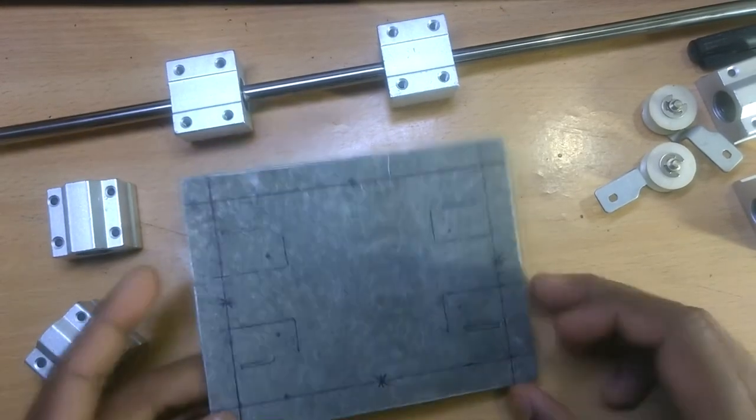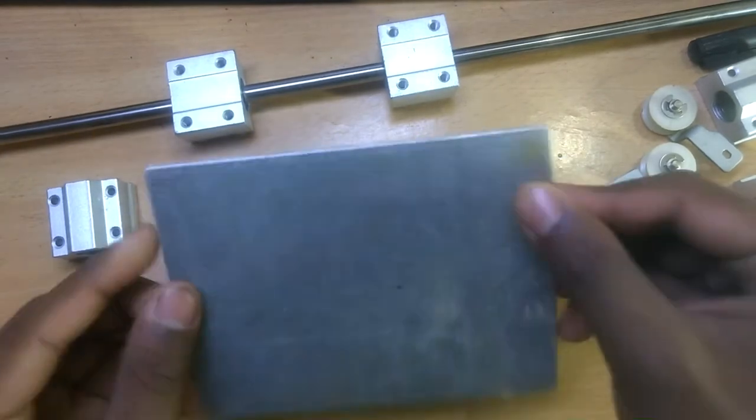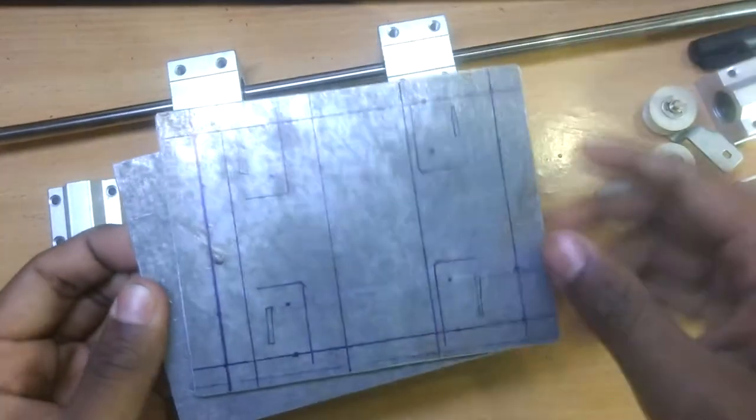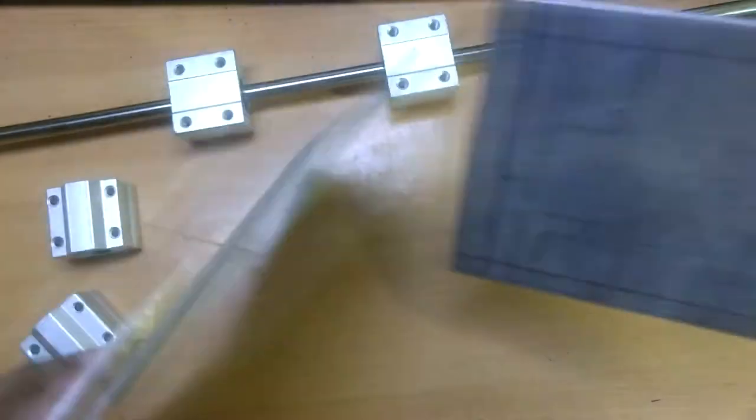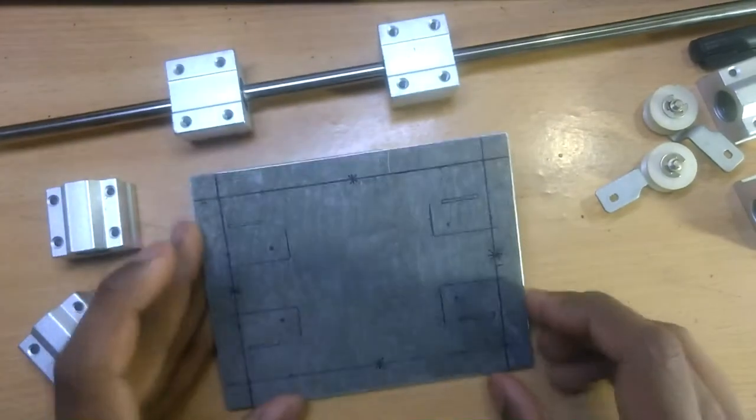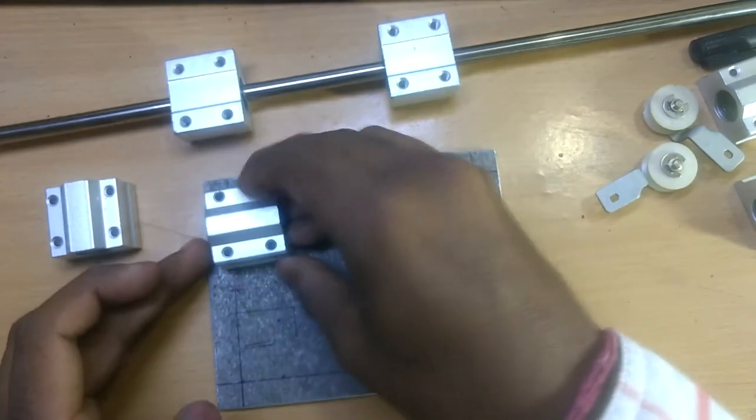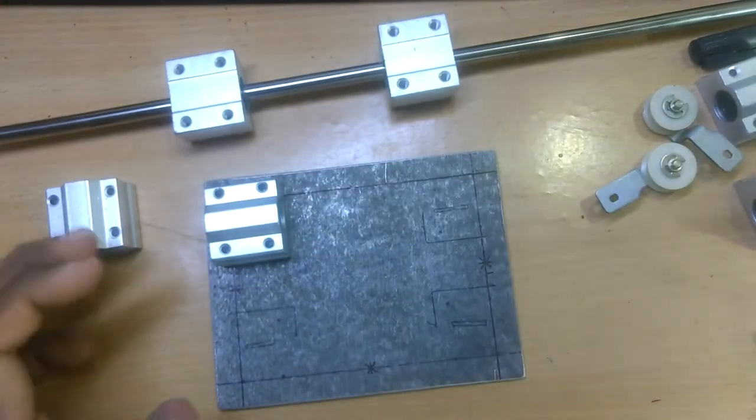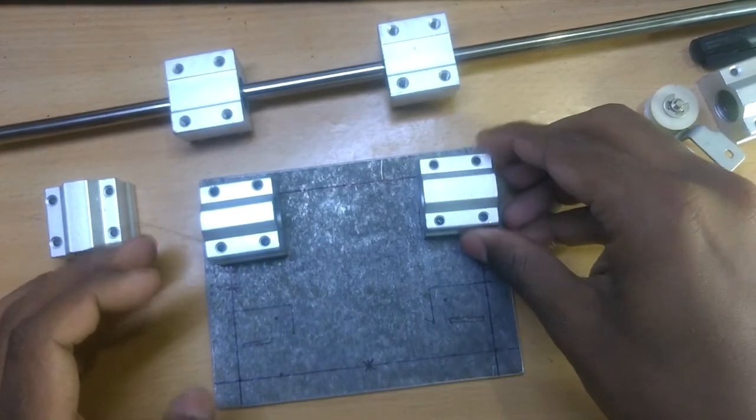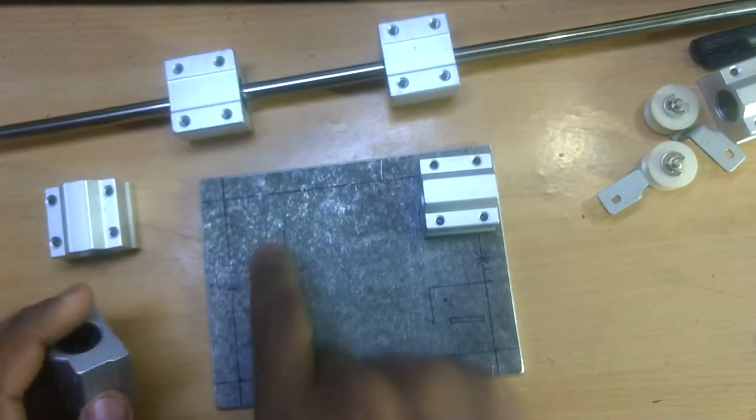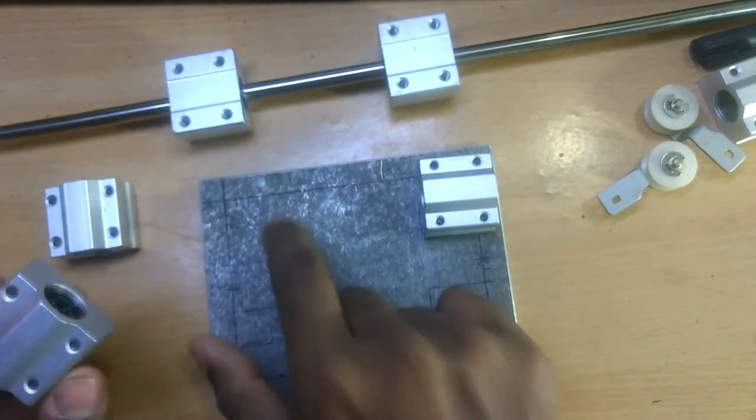You've seen that I've cut out these two aluminum plates for the base for the bush bearings. These bush bearings will be attached here, four of them, and I've also marked the points where the drills will be.